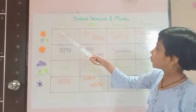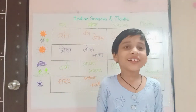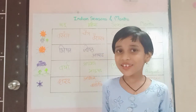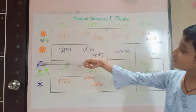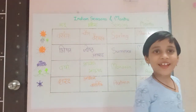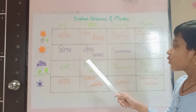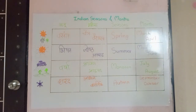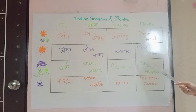Next is Ritu Varsha. Oh, it's raining — wow! Our favourite season. You can see greenery everywhere. It falls in Mahina Shravan and Bhadrapad. The English name for Varsha is Monsoon, which falls in July and August.